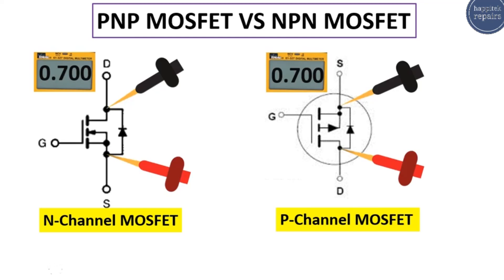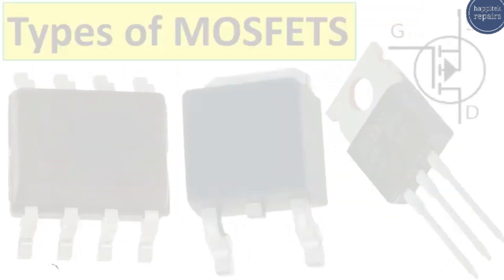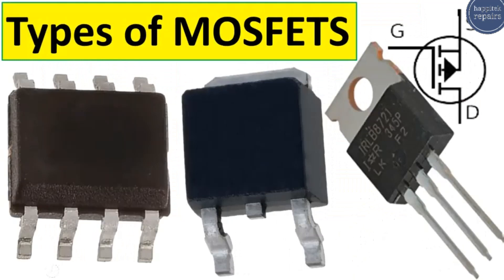For the p-channel MOSFET it is the inverse: the anode of the diode is connected to the drain and the cathode is connected to the source. This is all about the types of MOSFETs and the difference between p-channel and n-channel MOSFETs. I hope you enjoyed the video — don't forget to subscribe and like the video.